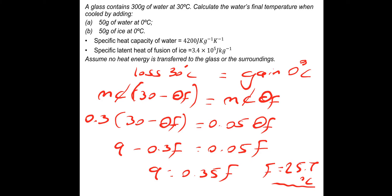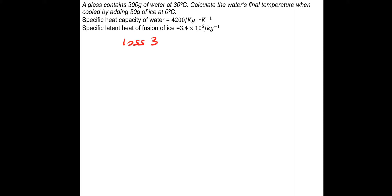The next question, part b: we've got 50 grams of ice at zero degrees Celsius. Make sure you've got these written down. Again, we've got the loss of heat energy from the 30-degree water. This time the heat is going to flow into the ice and melt the ice, and then raise the temperature of what was the ice once it's become water.